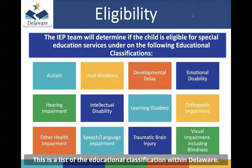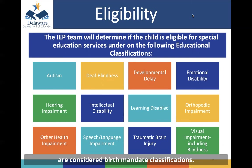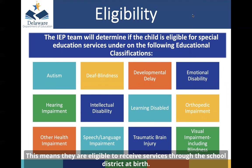This is a list of the educational classifications used within Delaware. Different classifications begin at different ages. For example, children identified as having autism, deaf-blindness, hearing impairment, and visual impairment are considered birth mandate classifications, meaning they are eligible to receive services through the school district at birth.